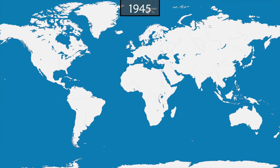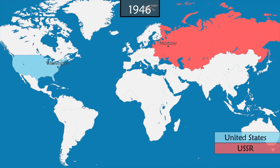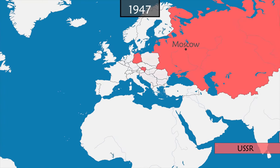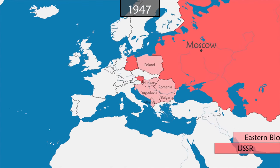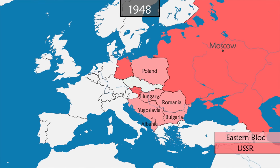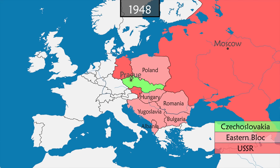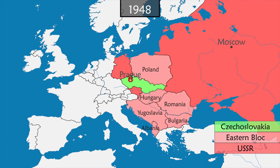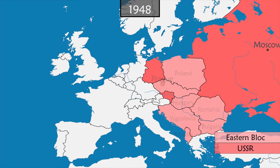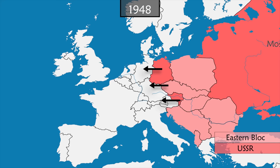We begin at the end of World War II. Among the victors, the USSR and the United States are now the two world superpowers. Europe is devastated, and the east of the old continent is under the influence of the Soviet Union. In February 1948, Czechoslovakia, which is a parliamentary democracy, suffers a coup d'état orchestrated by the Communist Party and supported by the Soviet camp. In Western Europe, this event leads to fears that Soviet influence will spread further westward.